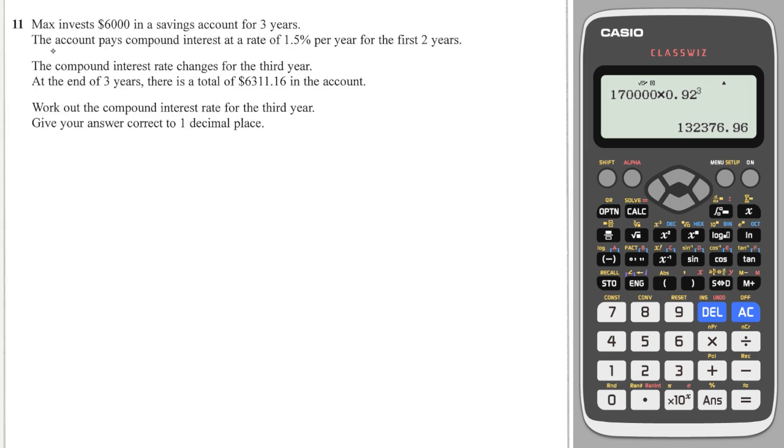Tricky question alert: Max invests £6,000 in a savings account for three years. The account pays compound interest at a rate of 1.5% for the first two years, then the compound interest rate changes for the third year. At the end of three years, there is £6,311.16. Work out the rate for the third year.